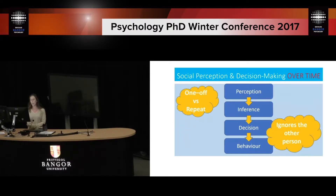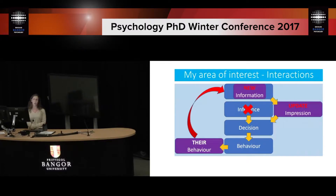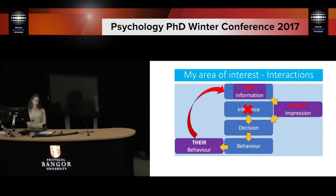Rather than just looking at this one-off process of perception, decision, action, I'd actually like to look more into what happens when we are getting information about the other person. We may need to update our behaviour to reflect the fact that the other person's behaviour will likely impact on our behaviour. Through our experience we'll get new information on this person, and maybe we should actually ignore the original social information and update our impression, which should then feed into changing our behaviour.